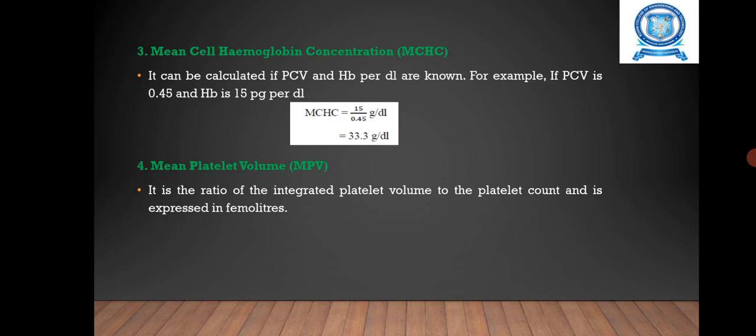Next we are going to see the mean cell hemoglobin concentration (MCHC). It can be calculated if PCV and hemoglobin per deciliter are known. For example, if PCV is 0.45 and hemoglobin is 15 picograms per deciliter, then MCHC equals 15 divided by 0.45 deciliters.